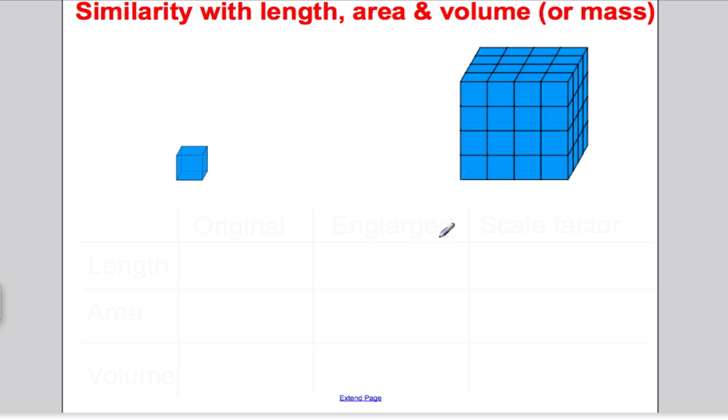Let's take this to the next level and talk about similarity extending to what happens with the area and volume or mass of similar shapes. I've got myself here a 1 centimetre cube, and I've enlarged that shape so it's 4 centimetres by 4 centimetres by 4 centimetres. It was 1 centimetre in each direction before.